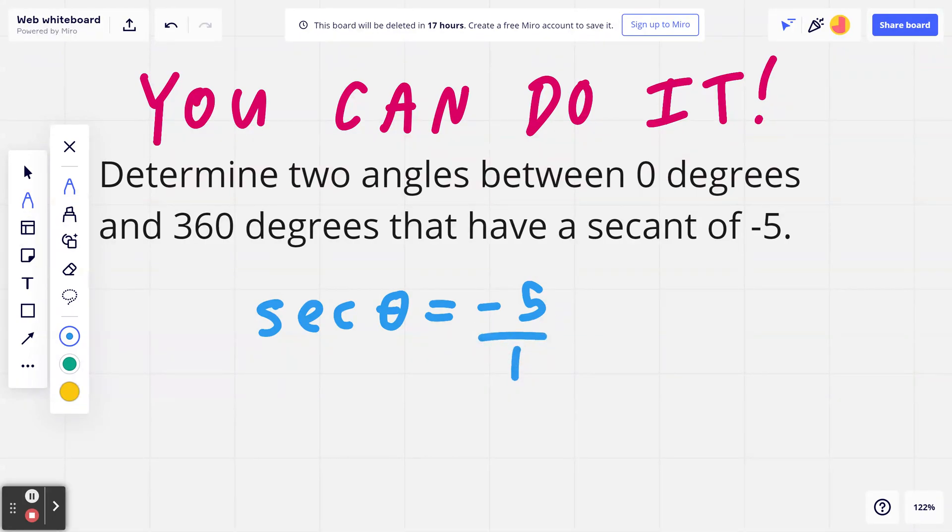Step number 2. If you think about the reciprocal function secant theta, this equals 1 divided by cosine theta. So you can write down 1 divided by cosine theta equals negative 5 divided by 1.